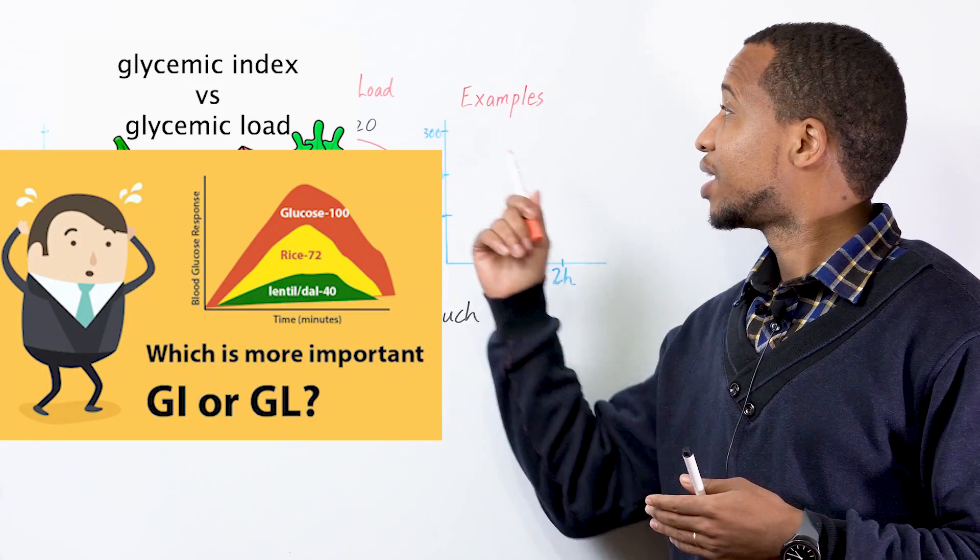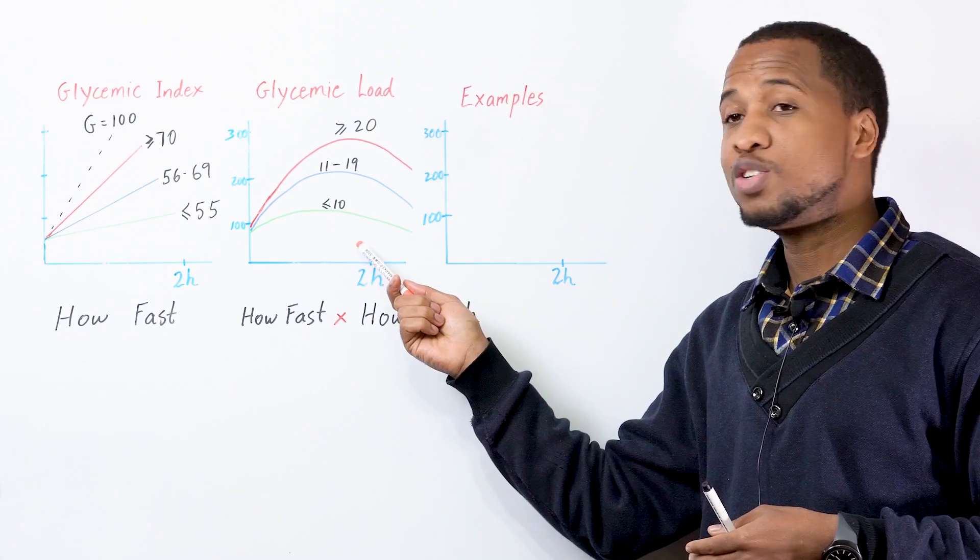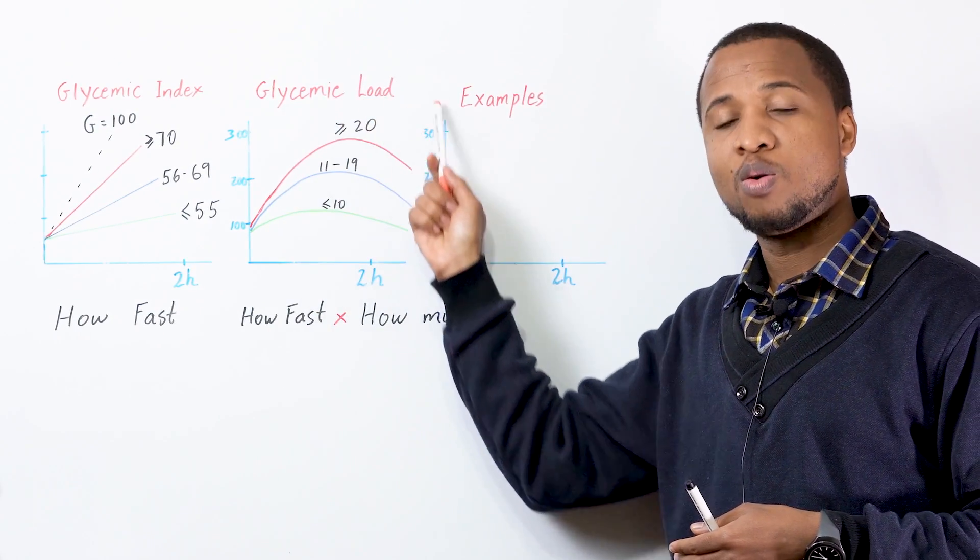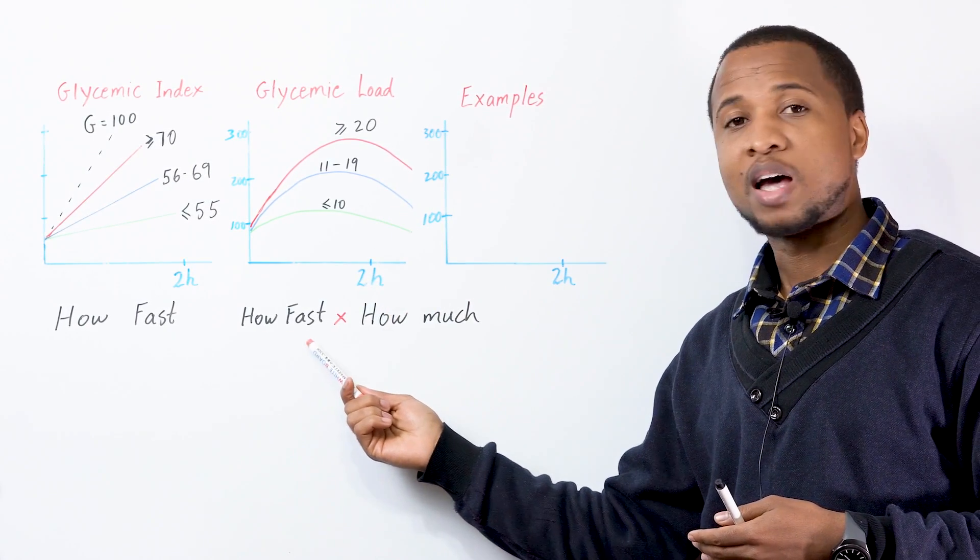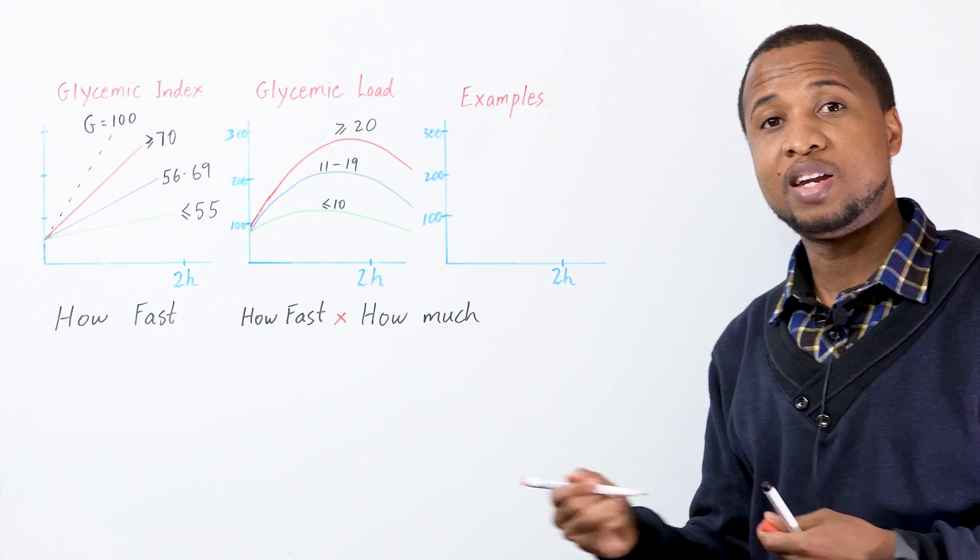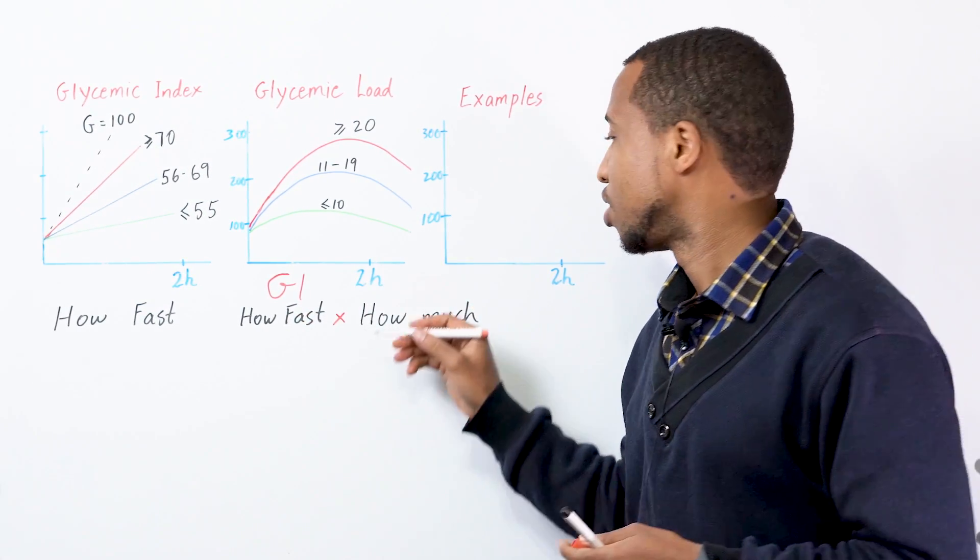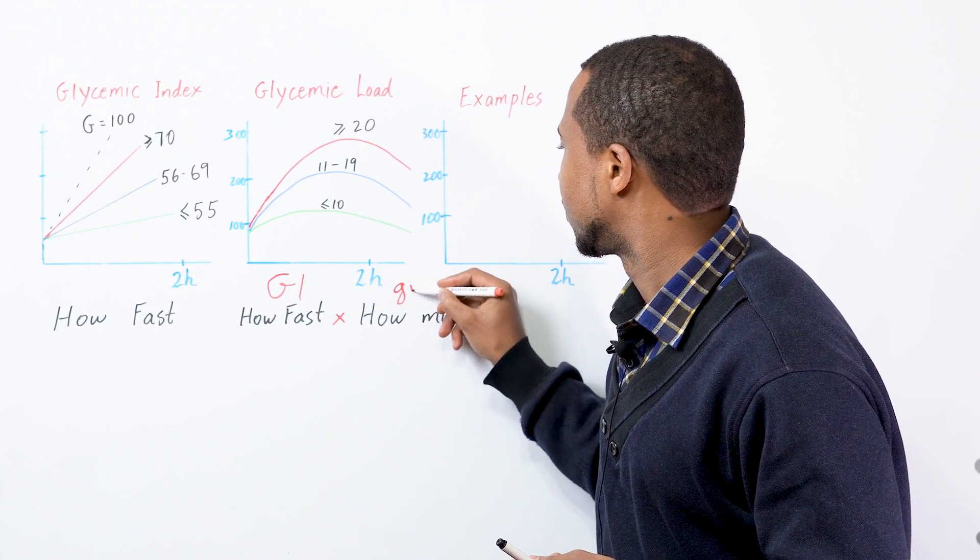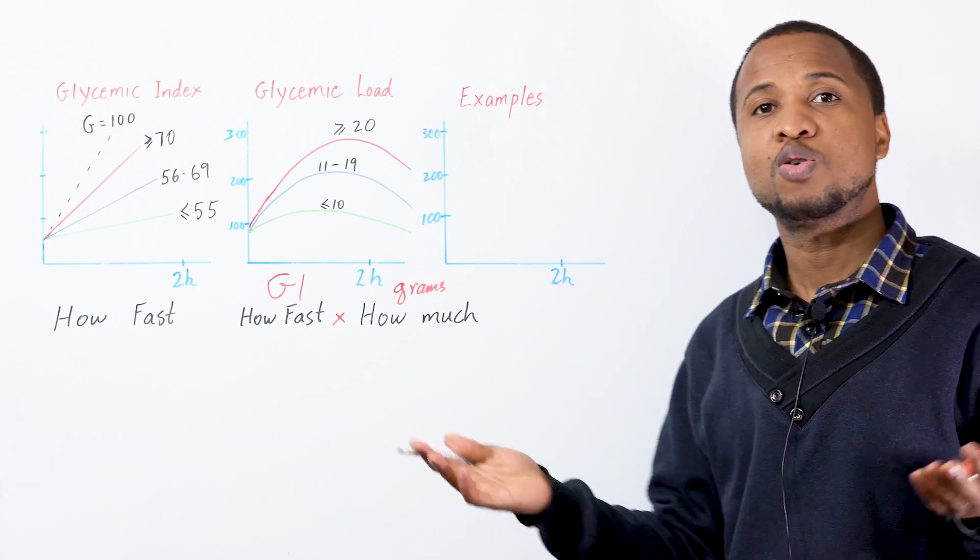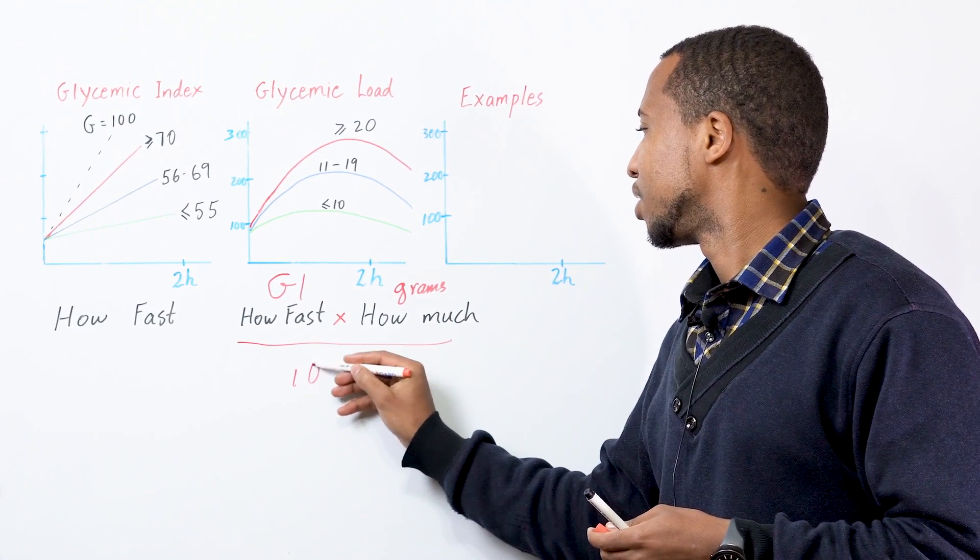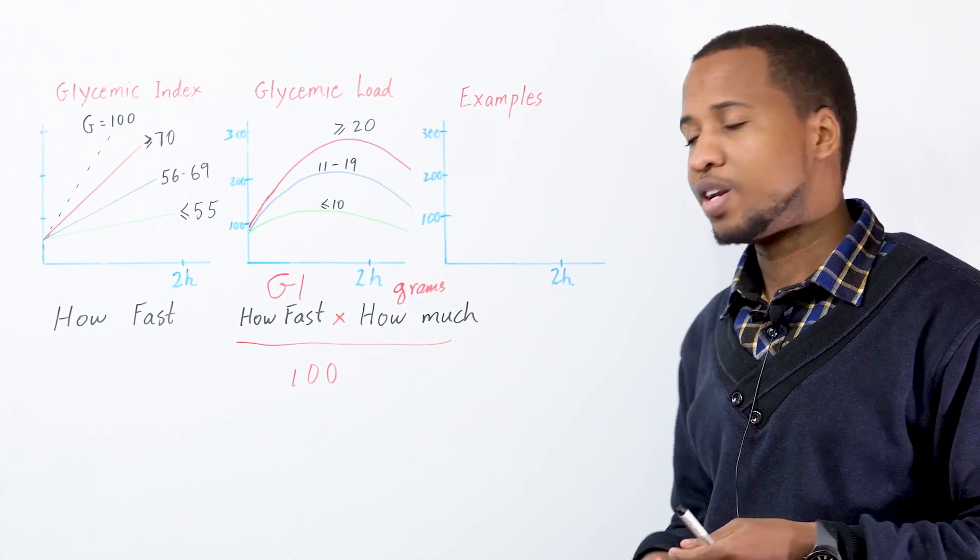So, we will look at glycemic load. This one tells you how fast, but this one will tell you how fast and how much. So, we have how fast, which is glycemic index, and how many grams of carbs are in the food. Now, of course, we need to divide it by 100 just to make it more professional, but it doesn't change anything.